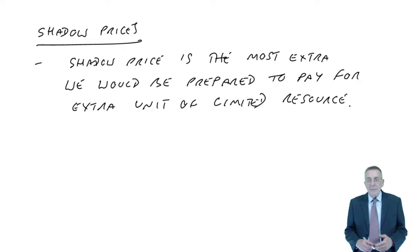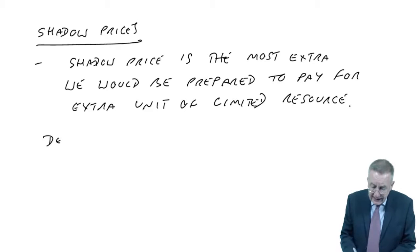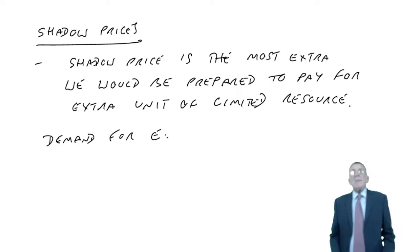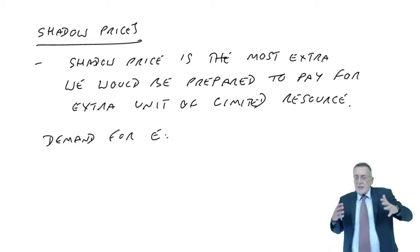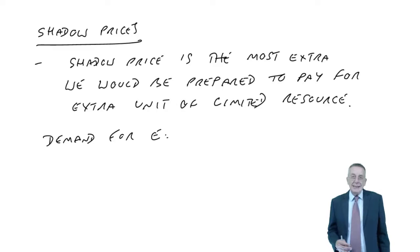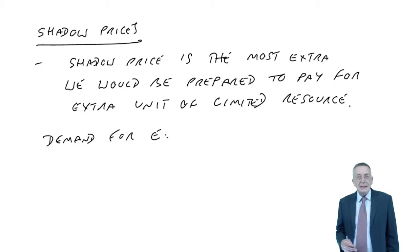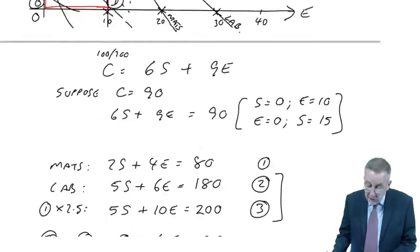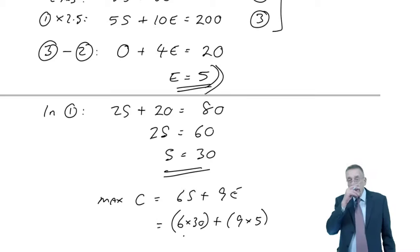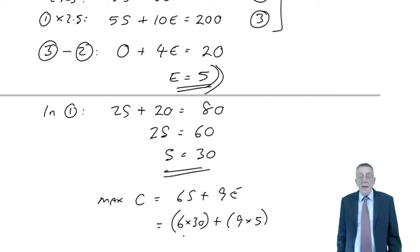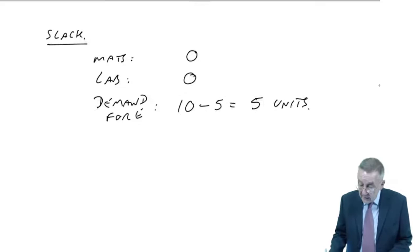What about demand for E? At the moment, the maximum demand is 10 units. Suppose I could pay some money and get the demand up to 11 units. Would it be worth it? No, it wouldn't. Because the other constraints limited us to only producing five executive. We're not going to produce more than five anyway. The shadow price would be zero.